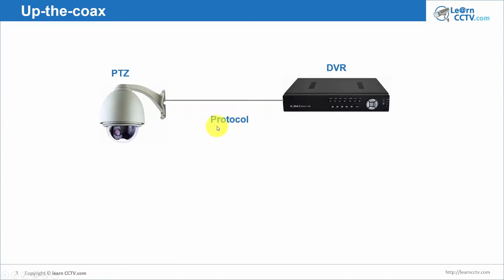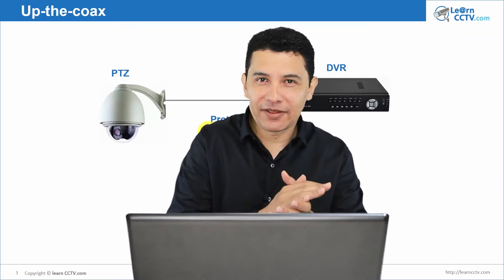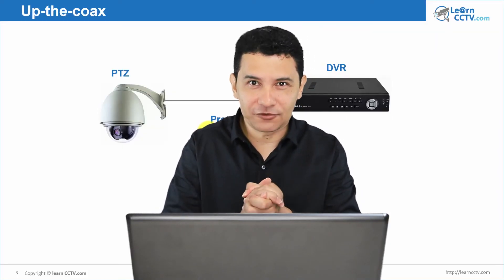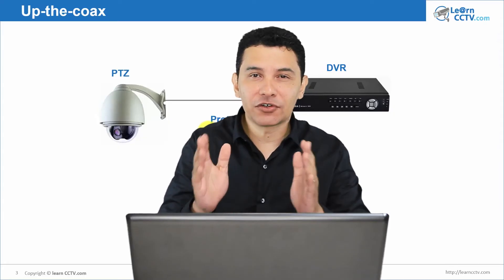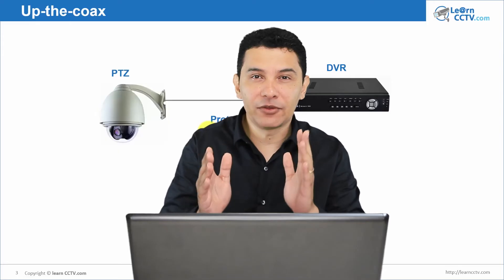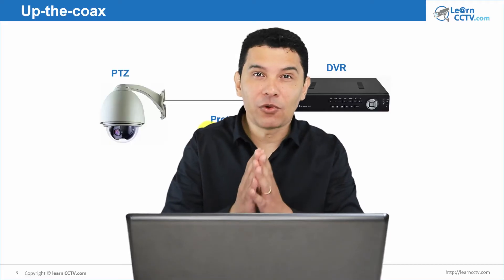The most well-known protocol in the market is Coaxitron. It's from Pelco — a big manufacturer in the market. Sometimes you'll find extra equipment that also uses Coaxitron. For example, if you're using different manufacturers and they want to control your camera using the coaxial cable, you can use Coaxitron.